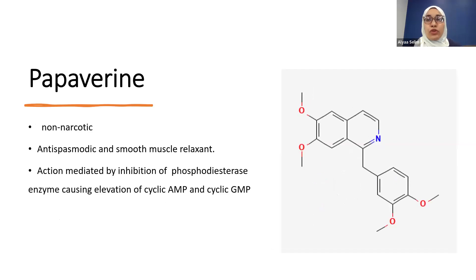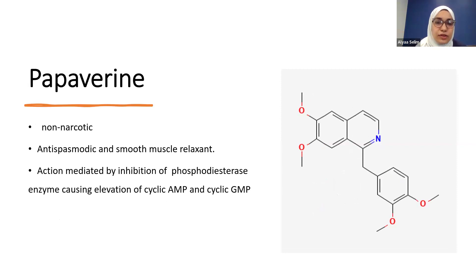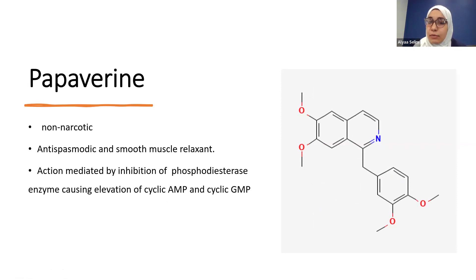Then we have papaverine, which is non-narcotic — it does not have any narcotic activities and does not work as an analgesic. It is a smooth muscle relaxant and is effective in this action. It is mediated by a different mechanism: inhibition of the phosphodiesterase enzyme, causing elevation of cyclic AMP and cyclic GMP.